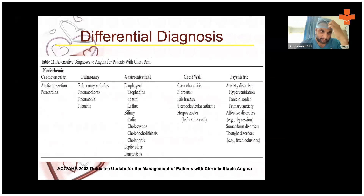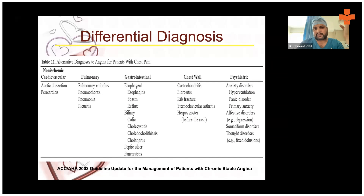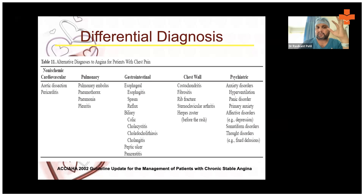When a patient presents to your OPD with chest pain, consider the differential diagnoses: aortic dissection, pericarditis, acute myocardial infarction, unstable angina, pulmonary embolus, pneumothorax, pneumonia, pleuritis, gastrointestinal or biliary causes, esophageal disease, chest wall diseases like costochondritis, fibrositis, or rib fracture, and most commonly psychiatric disorders such as anxiety and hyperventilation. After taking the three-point history, categorize into typical, atypical, or non-cardiac chest pain.